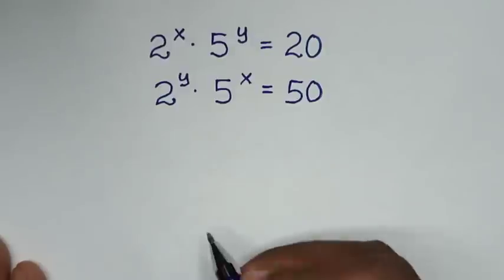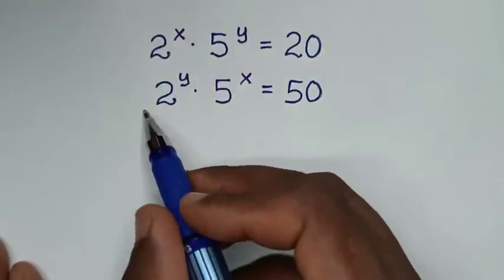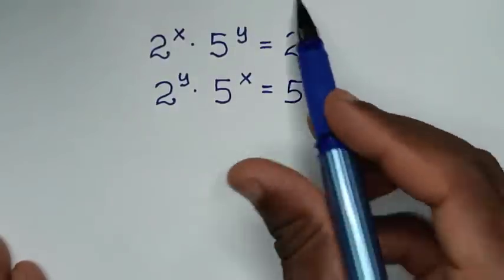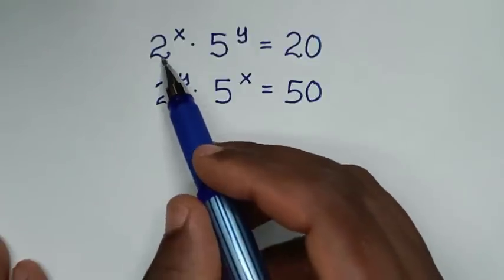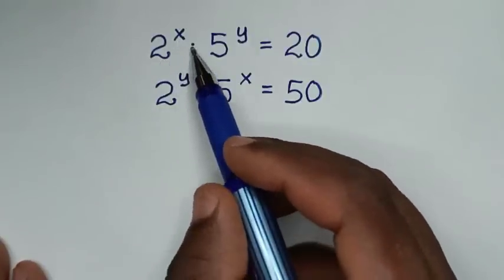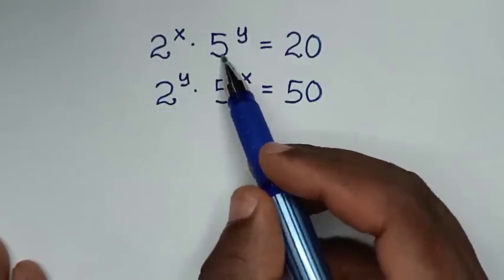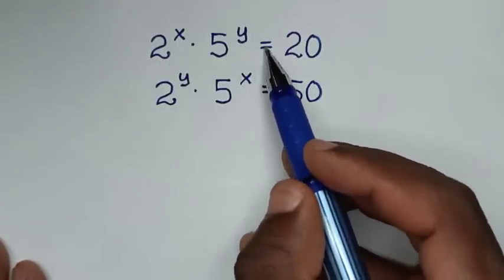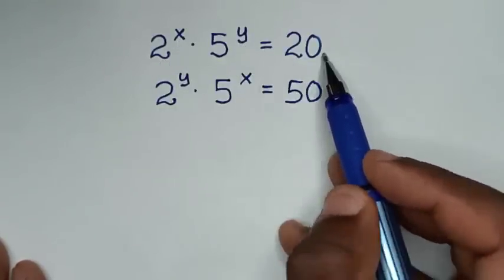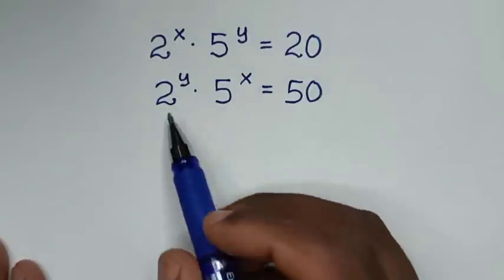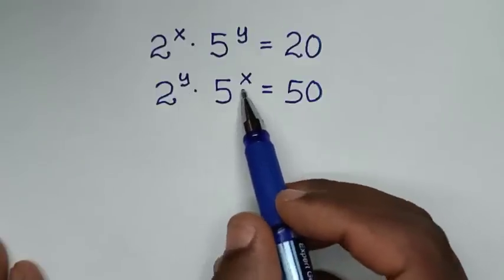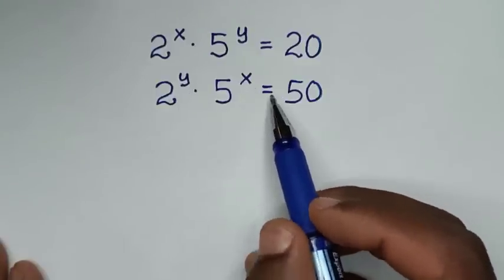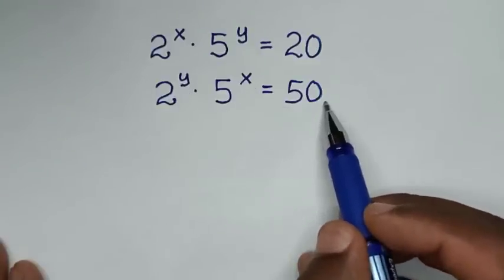Hello, you are welcome to solve this math problem. The problem is: 2 power of x times 5 power of y is equal to 20, and 2 power of y times 5 power of x is equal to 50.